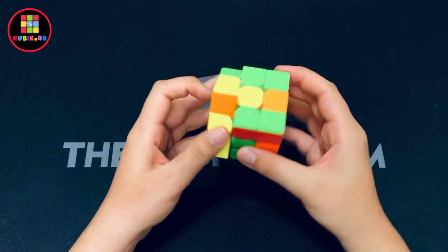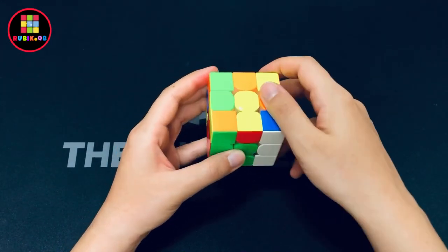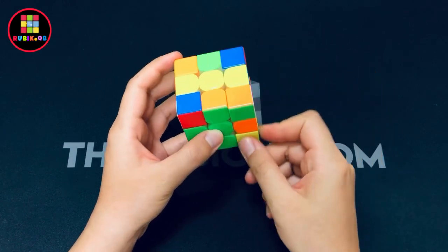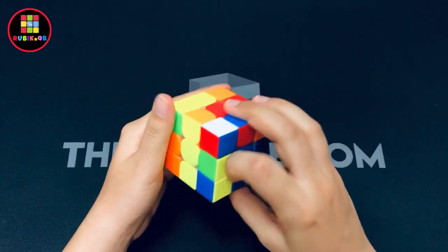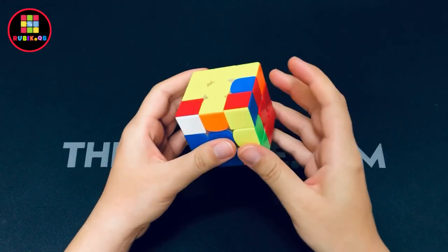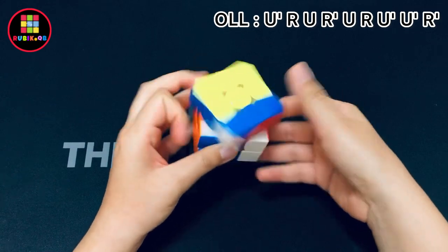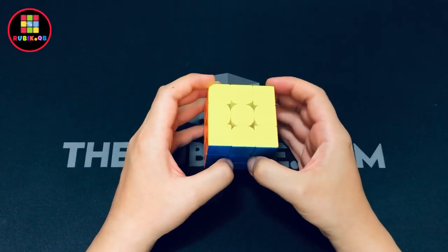And then the third pair—U2 R—and then connected these two together like this. And then the last pair, another cube rotation, and it's super easy OLL and PLL skip, and no AUF.